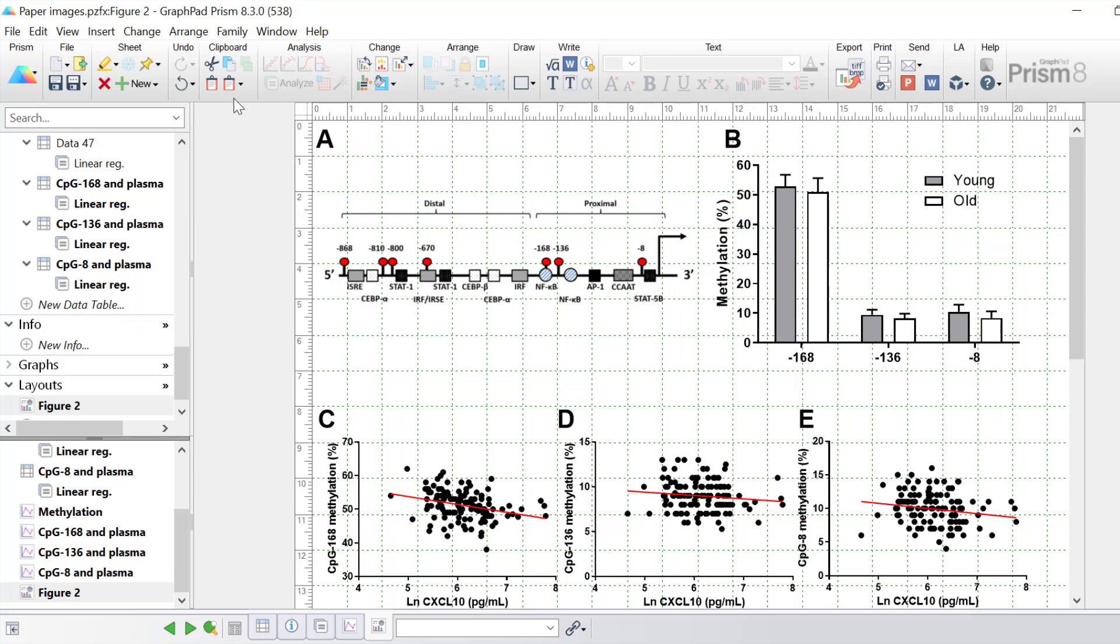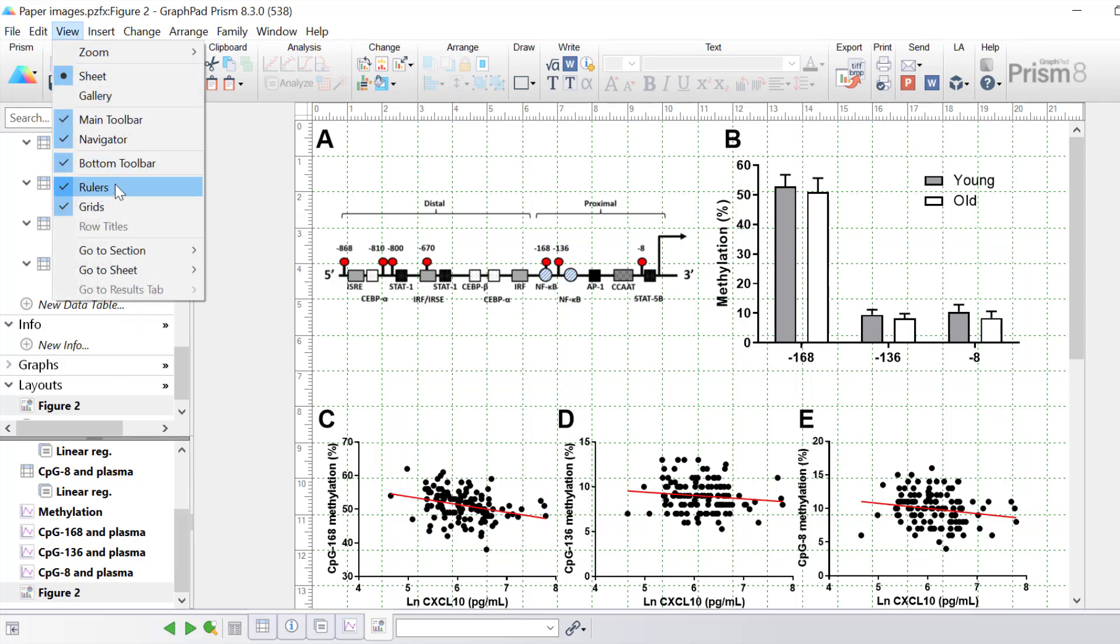If you don't want to view the rulers and the grids anymore you go back to view and untick rulers and grids.